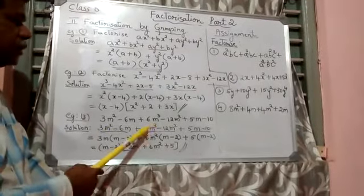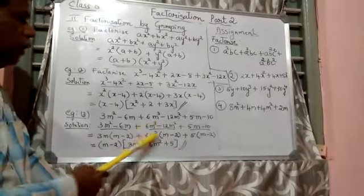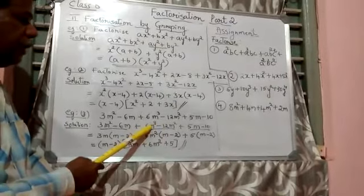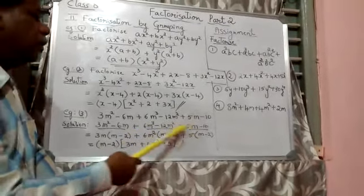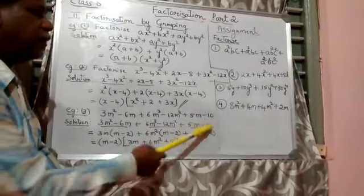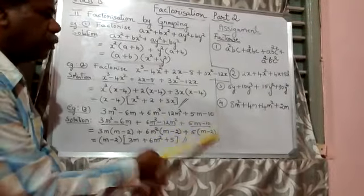In the second group, 6m² is common — take it out. m minus 2 remains. In the third group, 5m minus 10 — 5 is common, so 5 is taken out. m minus 2 remains.